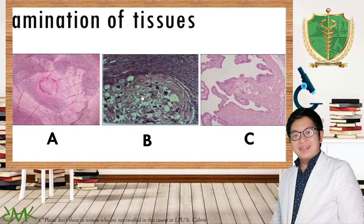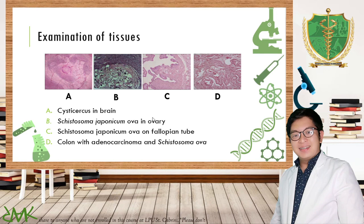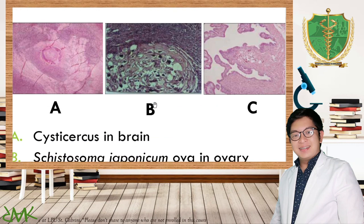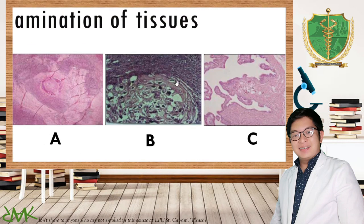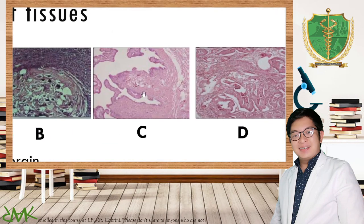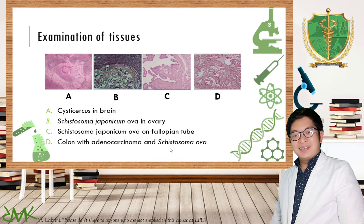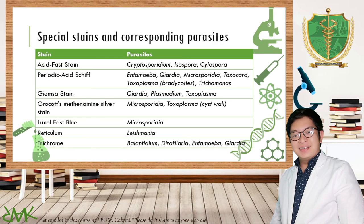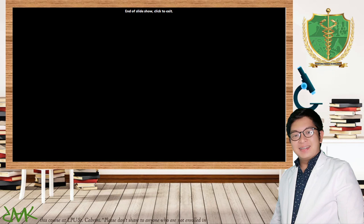For CSF, you can detect Trypanosoma cruzi, Trypanosoma brucei rhodesiense, Trypanosoma brucei gambiense, Naegleria fowleri, and Parastrongylus cantonensis. CSF must be examined immediately because Trypanosoma will perish within 20 minutes, and Naegleria fowleri trophozoite motility is also affected if not tested immediately. For tissue biopsy, Trichinella spiralis can be found in muscle biopsy, and neurocysticercosis in the brain results from cysticercosis. Rectal biopsy reveals the presence of Schistosoma japonicum because it resides in the mesenteric vein of the rectum.